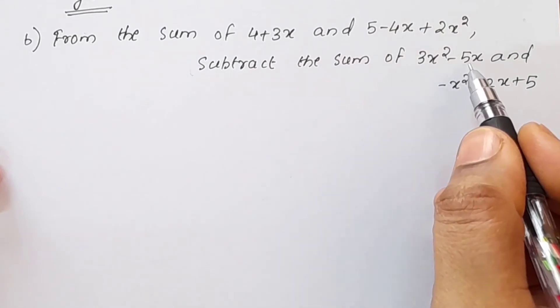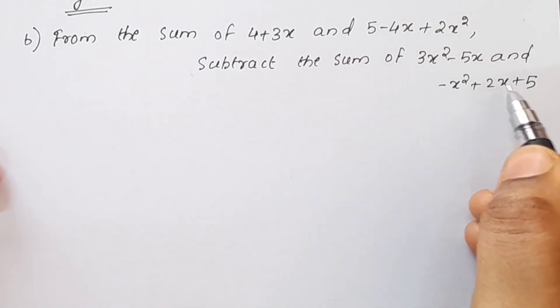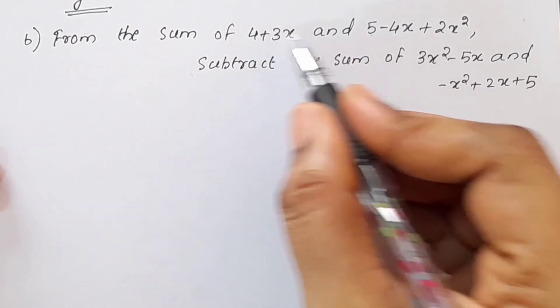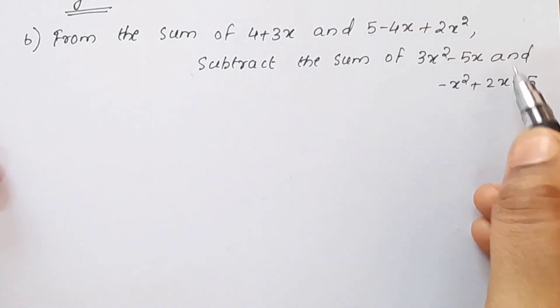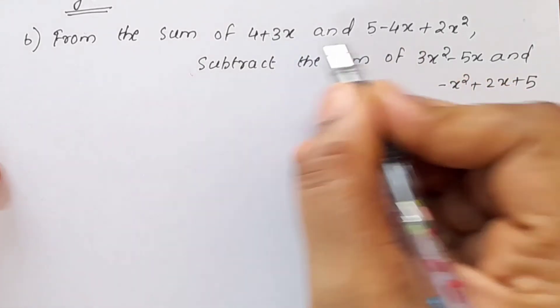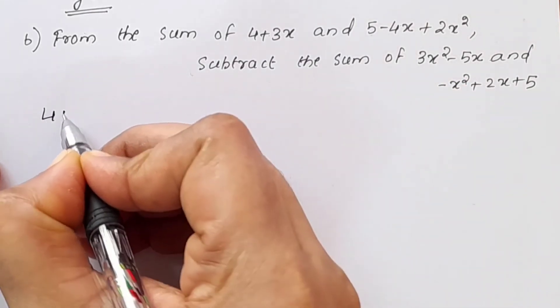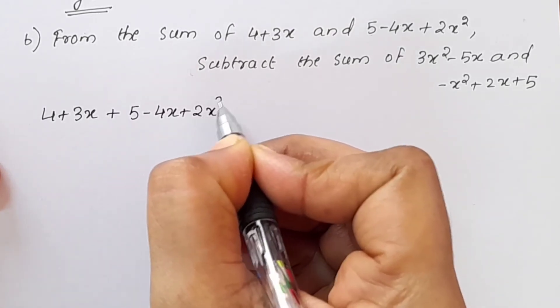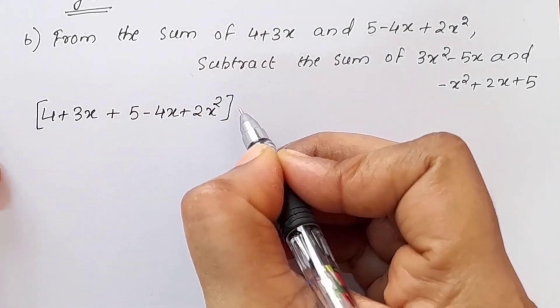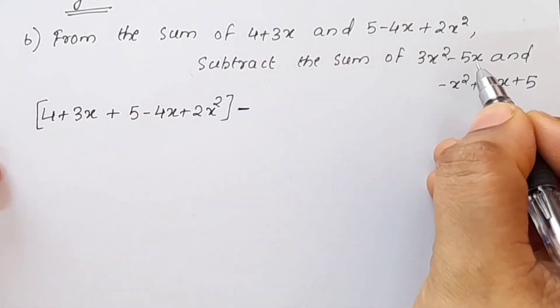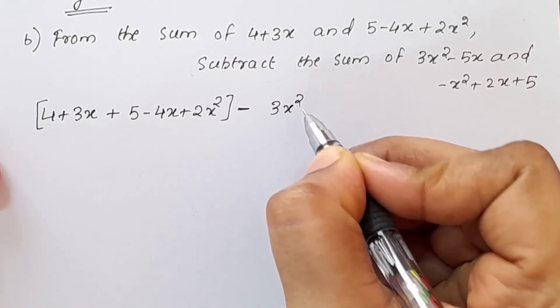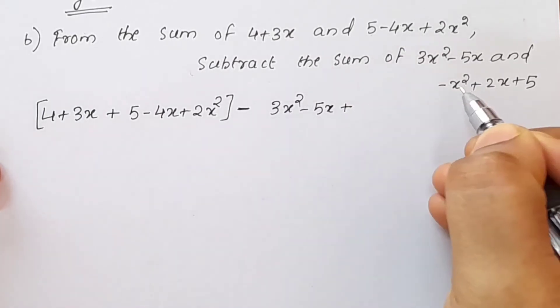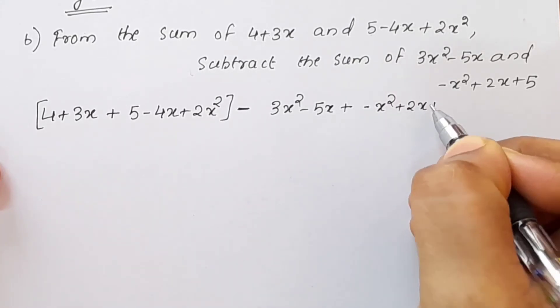This expression of sum is subtraction. Now, the sum of 4 plus 3x and 5 minus 4x plus 2x square, subtract the sum of 3x square minus 5x plus minus x square plus 2x plus 5.